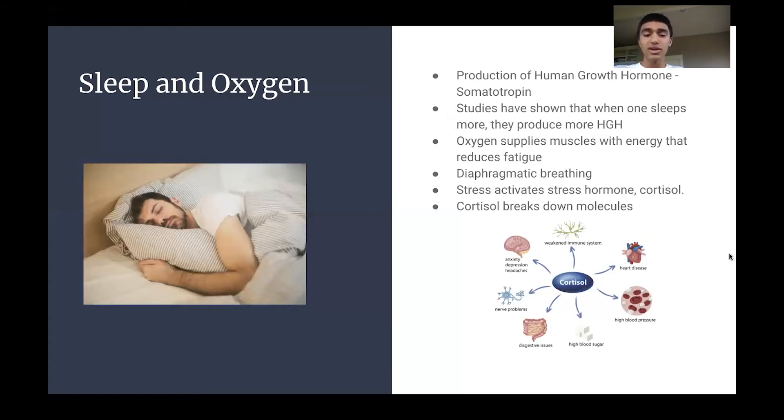When someone's stressed out, it activates the stress hormone called cortisol. And cortisol breaks down these molecules that are really important for muscle building and metabolism. So when you have a lot of cortisol, it kind of shuts down the other processes and doesn't allow those other processes to work as efficiently.